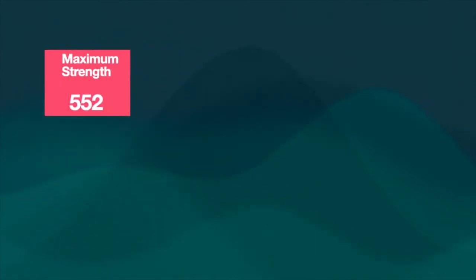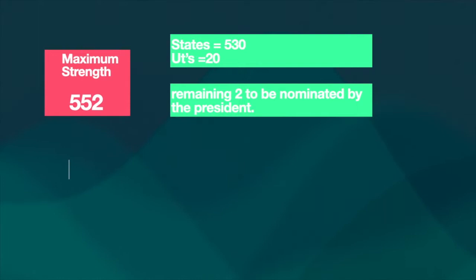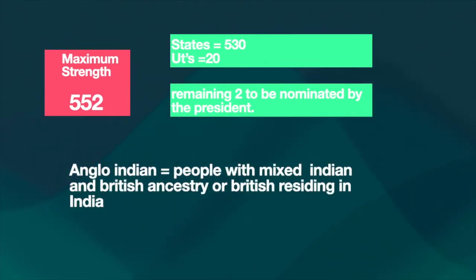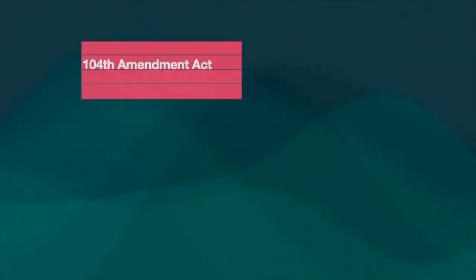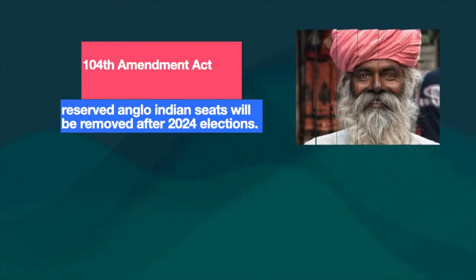The Lok Sabha's maximum strength given by the constitution is 552, according to Article 81. Out of those 552 seats, 530 are to be represented by the states and 20 to be represented by the UTs, bringing the total to 550. The remaining two are nominated by the president — candidates to be nominated will belong to the Anglo-Indian community, meaning people with mixed Indian and British ancestry or people of British descent born or residing in India. All representatives except the nominated are elected by the people of India. Total seats occupied: 543. However, according to the 104th Amendment Act, the reserved seats for Anglo-Indians will be removed after the 2024 elections.